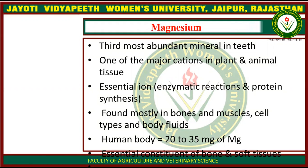Magnesium is an essential ion for enzymatic reactions and protein synthesis. It is mostly found in bones, muscles, cells, and body fluids. The human body consists of 20 to 35 grams of magnesium.